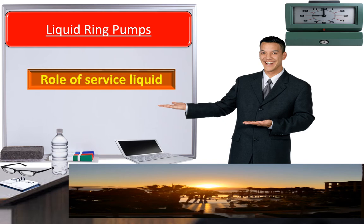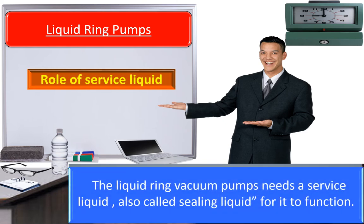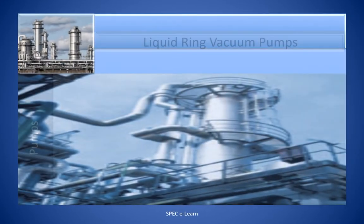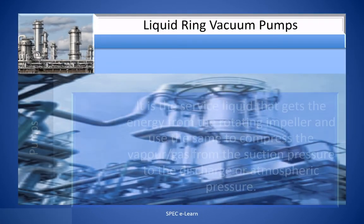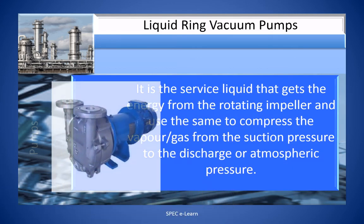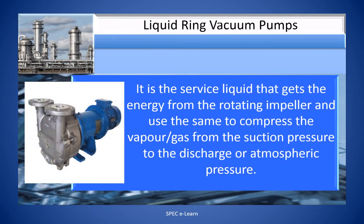The liquid ring pump needs a service liquid, also called sealing liquid, for it to function. It is the service liquid that gets energy from the rotating impeller and uses it to compress vapor or gas from the suction pressure to the discharge or atmospheric pressure.